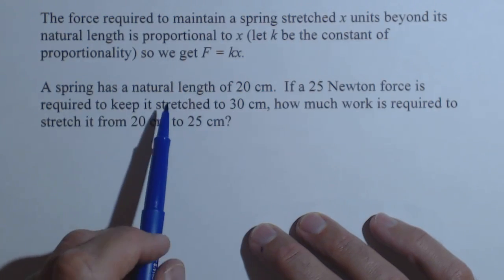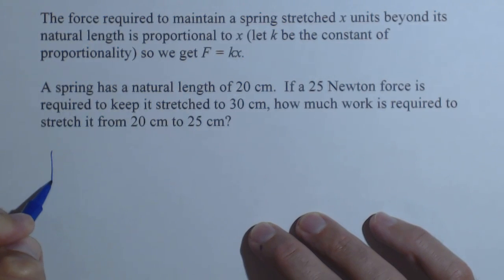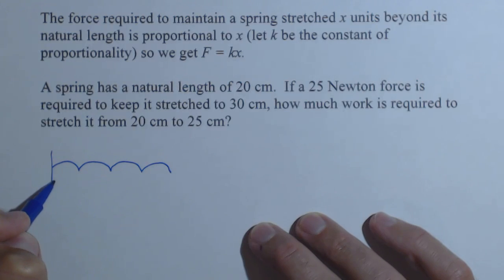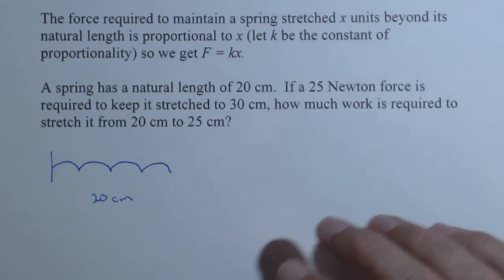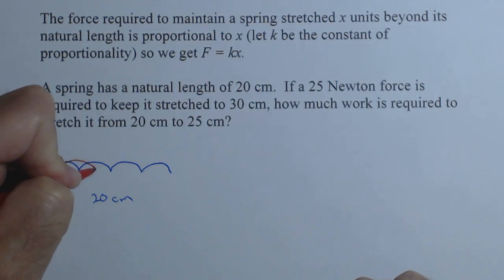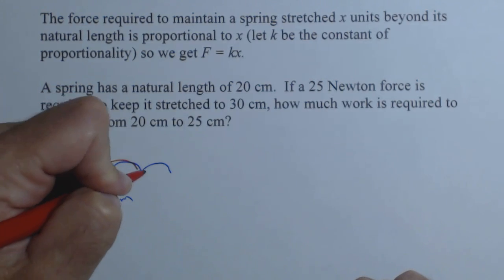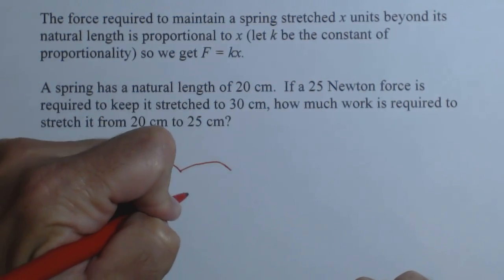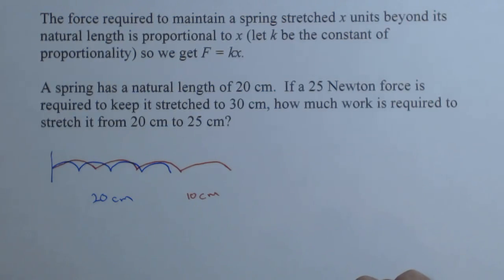Now let's see how that is used. So we have a spring whose natural unstretched length is 20 centimeters. Now what we're going to do is apply a 25 newton force to keep it stretched to 30 centimeters. It's the same spring, but now it's stretched out an additional 10 centimeters.